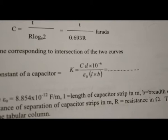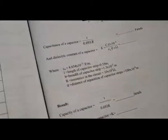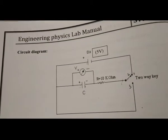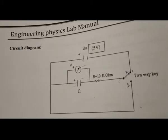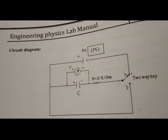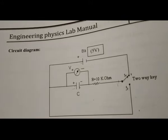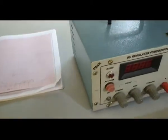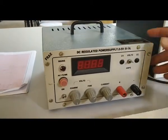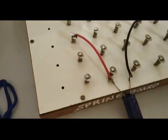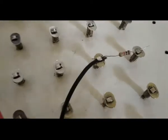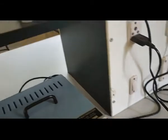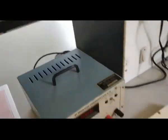The experimental circuit consists of a power supply, a capacitor, a resistor, a voltmeter, and a two-way plug key. The physical apparatus used includes a battery, a capacitor, a resistor, a two-way plug key, a voltmeter, and a stopwatch.